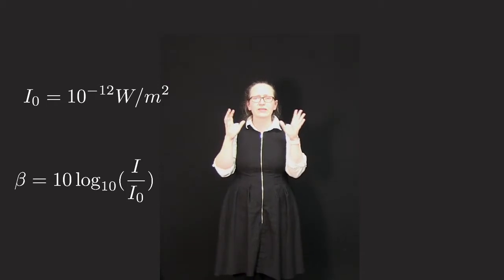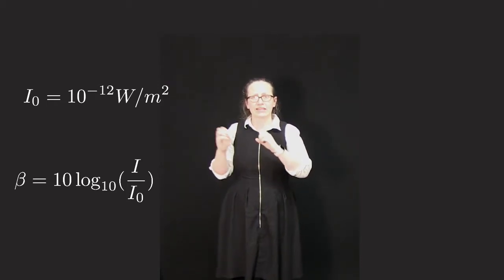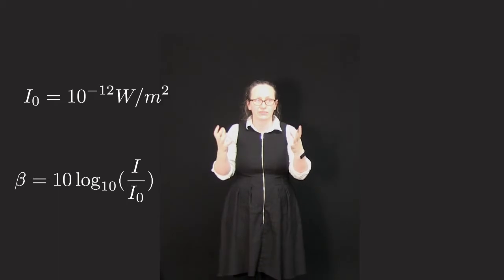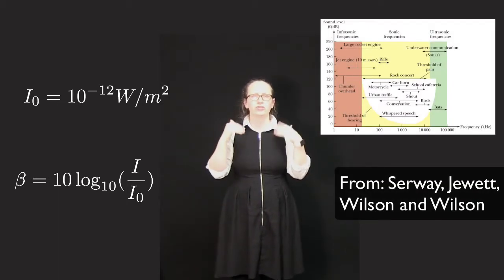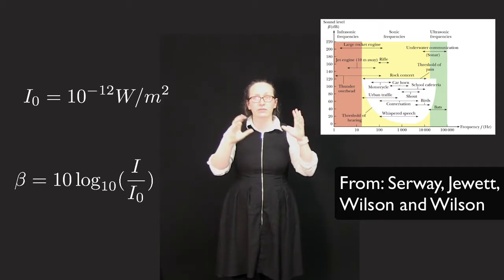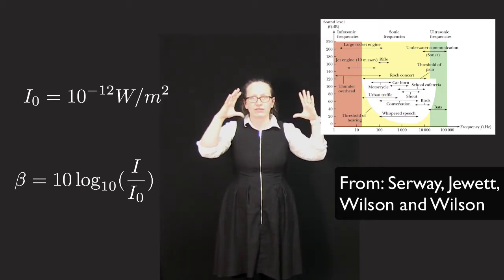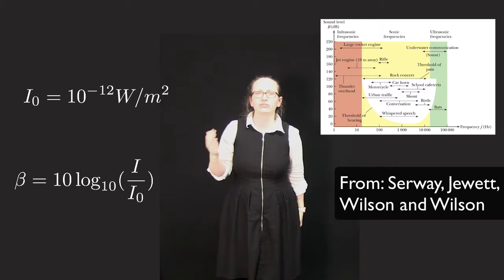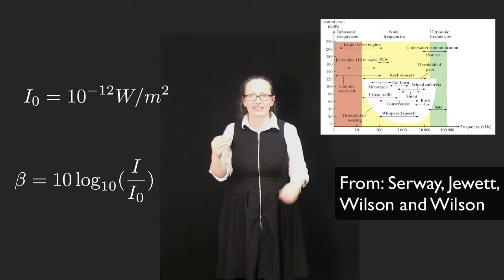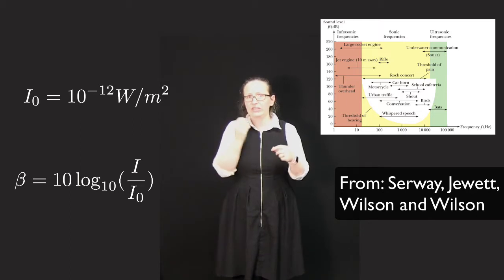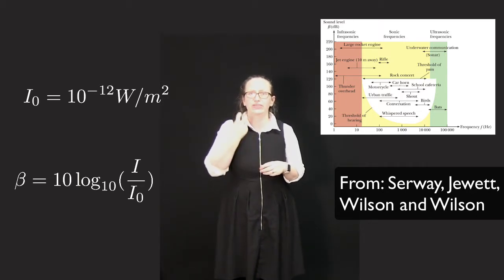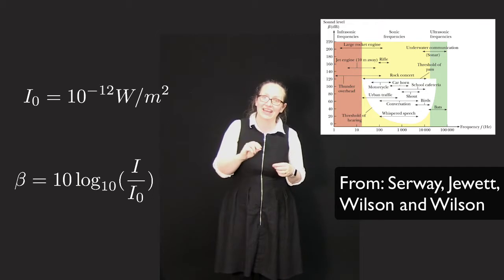Now the sounds that we can actually detect are related a bit to frequency, so human hearing is frequency sensitive. This diagram here shows you the different sound levels we can detect at the different frequencies. It's really interesting—dogs and bats can actually hear much higher frequencies than people can, so you can get special dog whistles which are at a really high frequency which people can't detect.